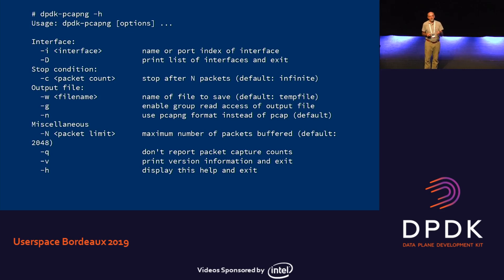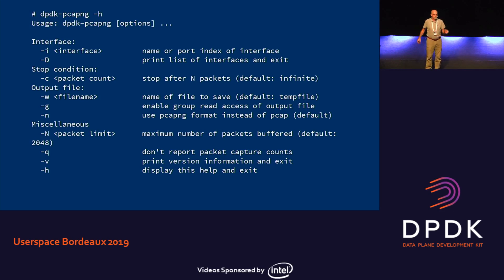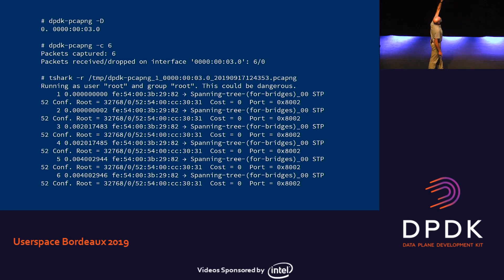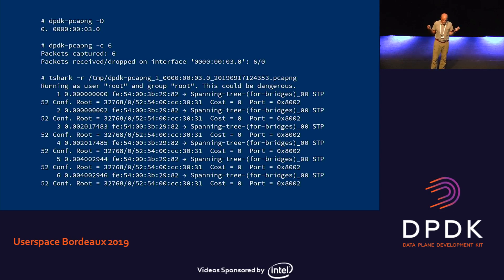The flags being added one by one are the same ones that exist on the dump-cap program for Wireshark. You can say dash capital-D to print a list of interfaces. It can take multiple interfaces on the command line — you can say I1, I2 to capture port 1 and port 2 at the same time. The output file uses the W flag. Some options aren't implemented yet, like the fallback to PCAP, and the display is made to look like dump-cap. All these examples were running on virtio on a laptop, so nothing particularly wild.